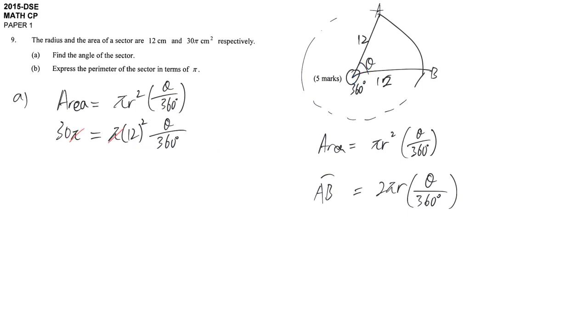Both sides divided by π, so it disappears. And then both sides divided by 12 squared, 144. And finally, I want θ, so both sides times 360 degrees. Therefore the angle is 75 degrees.